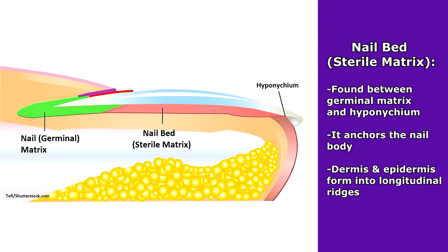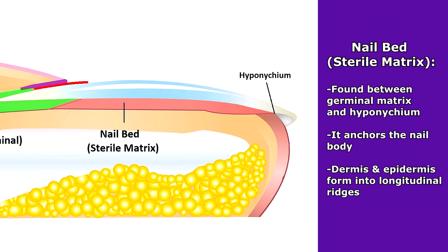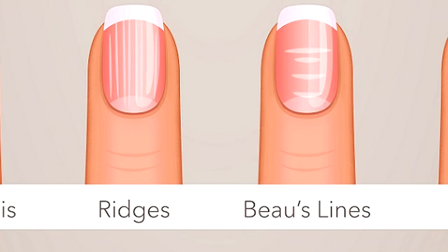Next, we have the nail bed, which is also called the sterile matrix. This is the area found between the lunula of the nail matrix and the hyponychium, and it allows for the attachment of the nail body. The dermis and epidermis of the nail bed often form longitudinal ridges, and sometimes if you look closely, you can see these small vertical ridges on the nail plate itself. These ridges can be normal; however, really deep ridges or horizontal ridges in the nails could indicate an underlying health issue.